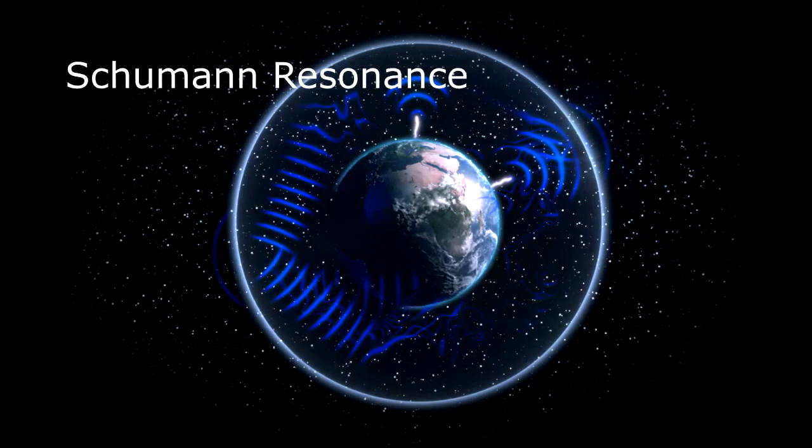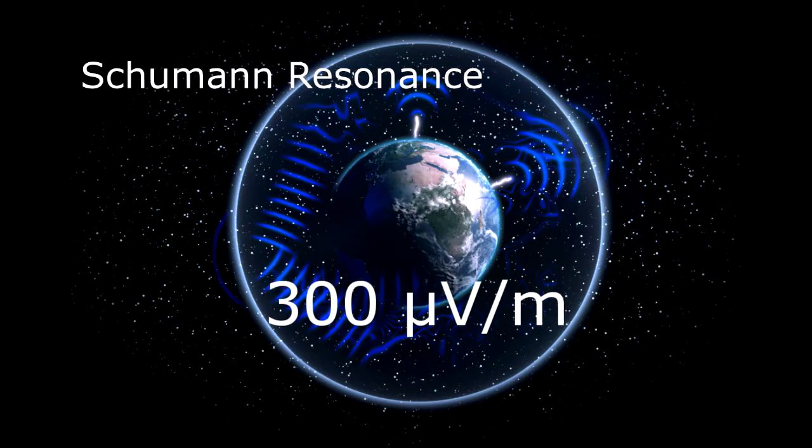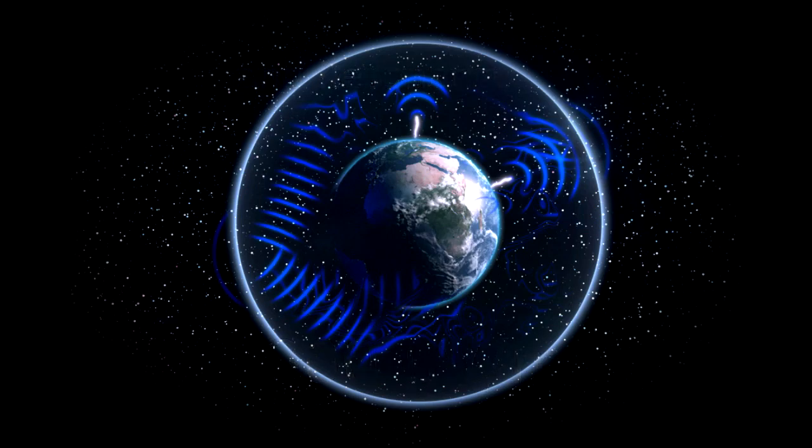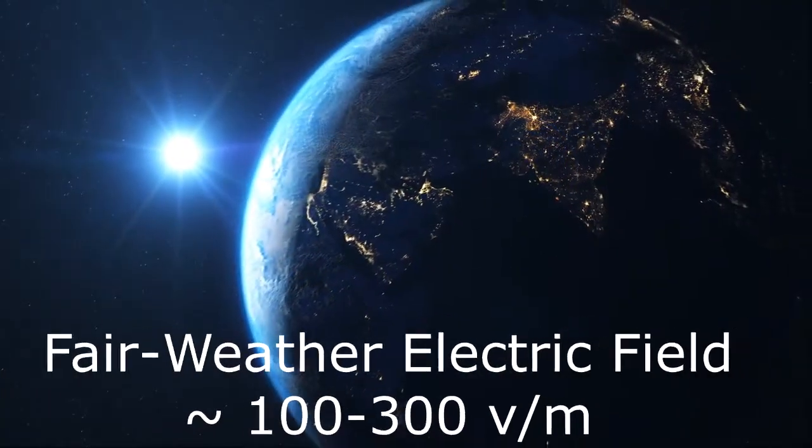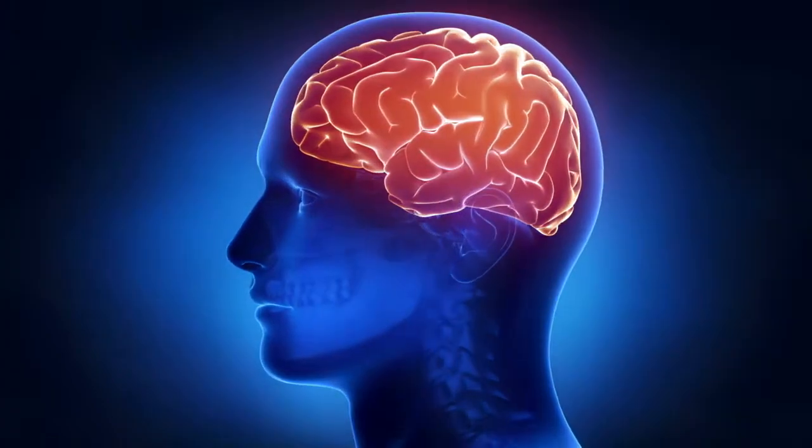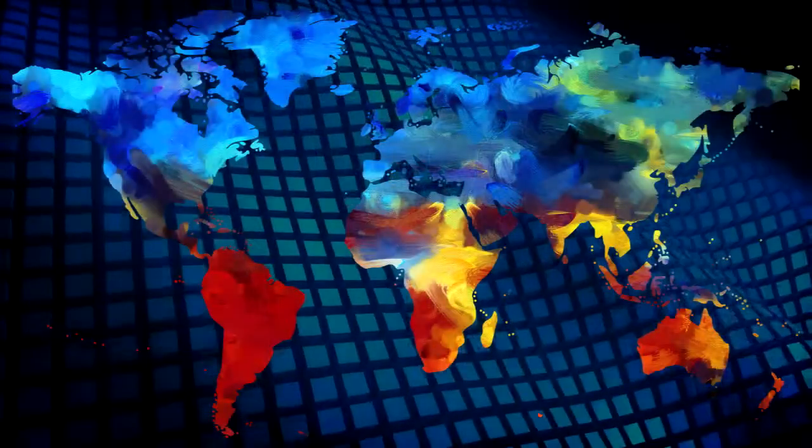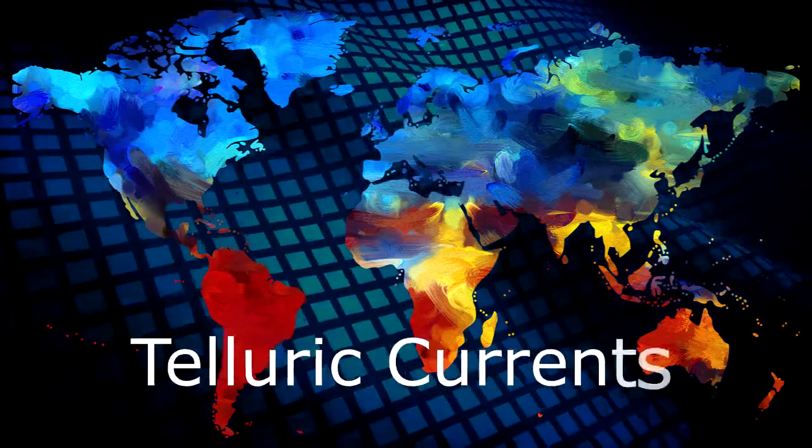Now, the Schumann Resonances have an electric field component. The Schumann Resonance electric field amplitude is about 300 microvolts per meter and is much smaller than the static fair-weather electric field that we talked about, but it's extremely biologically active due to the resonance and entrainment with the human brain.